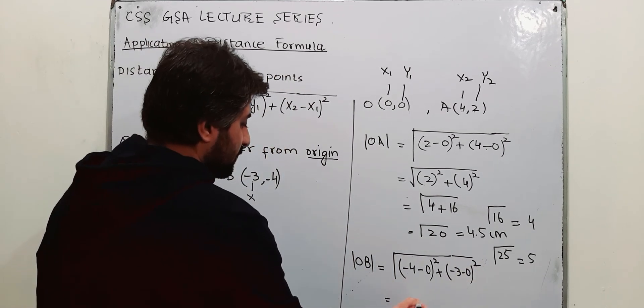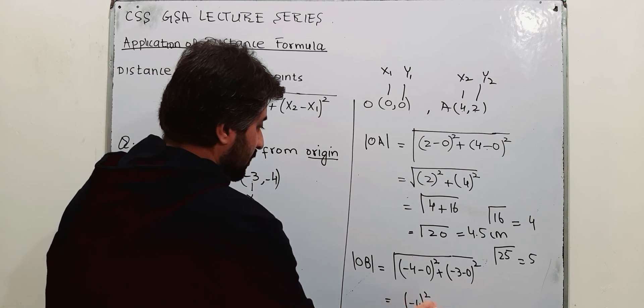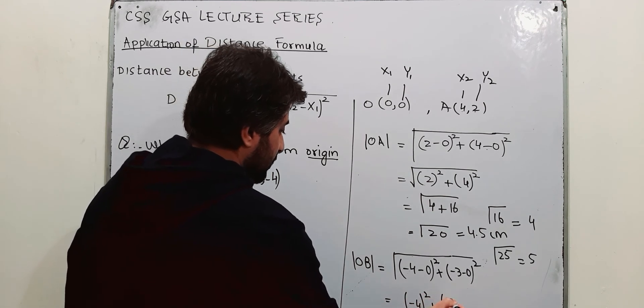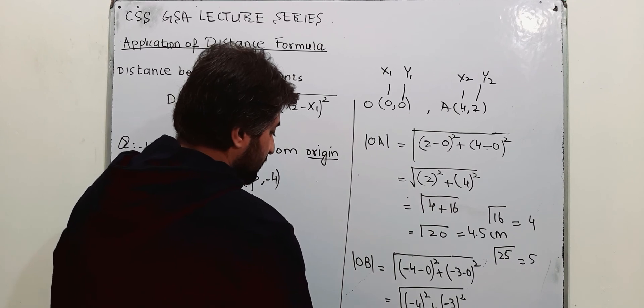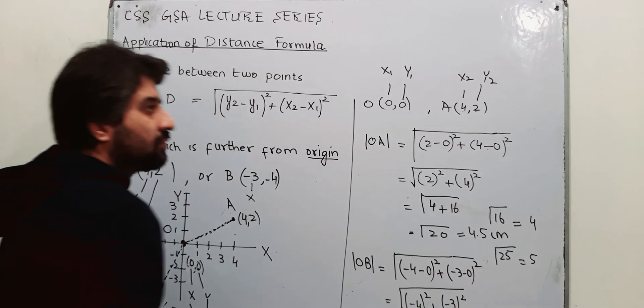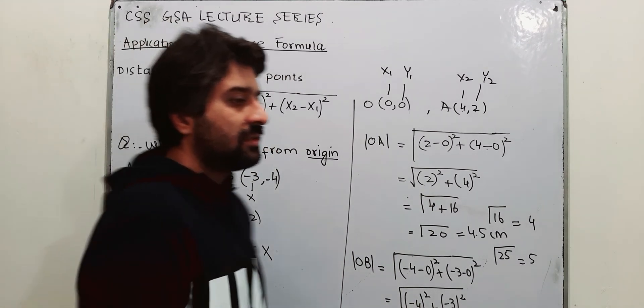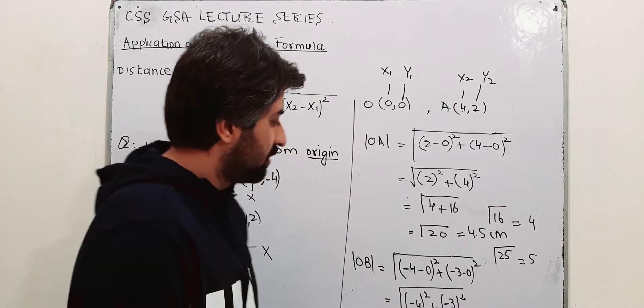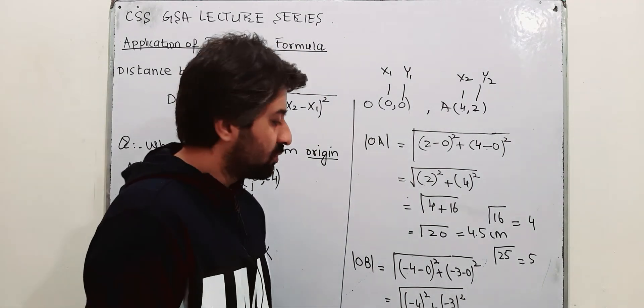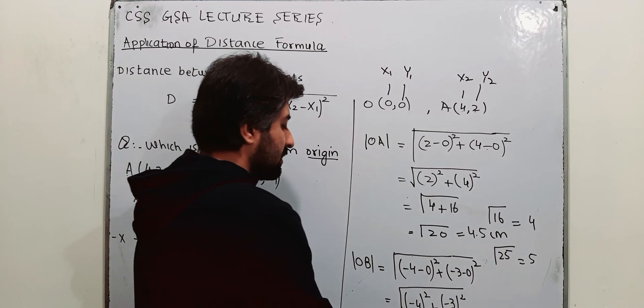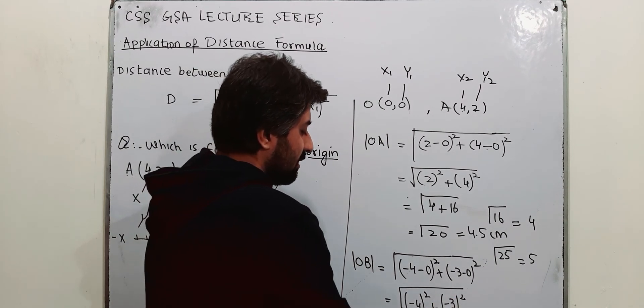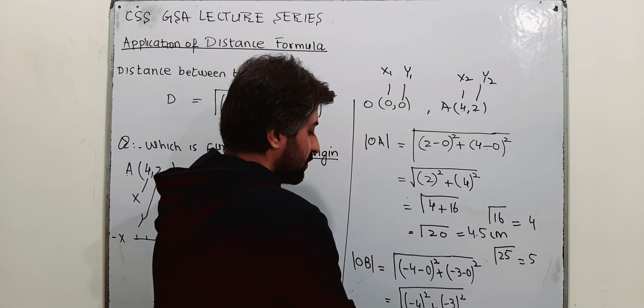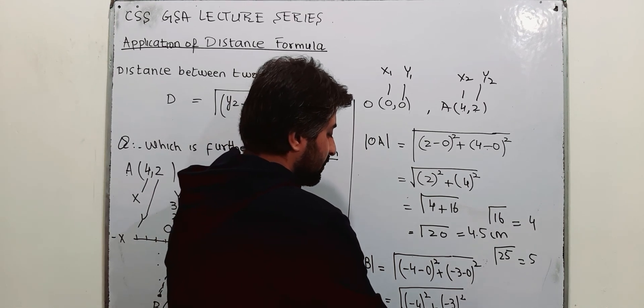Minus 4 minus 0 is minus 4. Minus 3 minus 0 is minus 3. Now this is 16. Well, minus square is plus, this is another point of mistake most people used to do. Minus square is plus, 4 square is 16, plus minus square is plus, 3 square is 9. Well that is 25, square root, and answer is 5 centimeters.